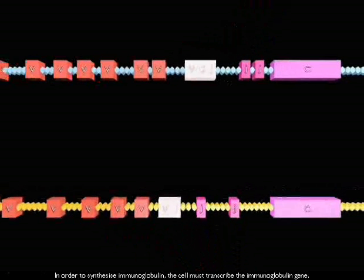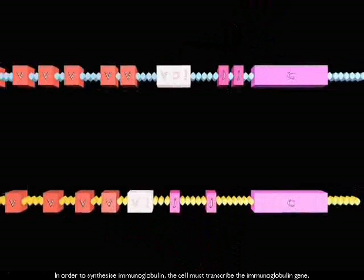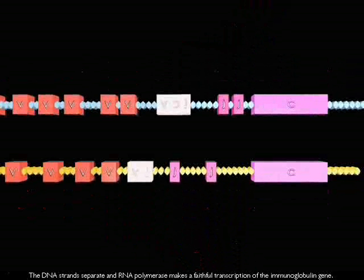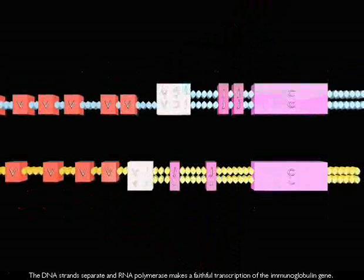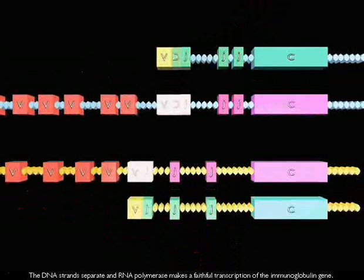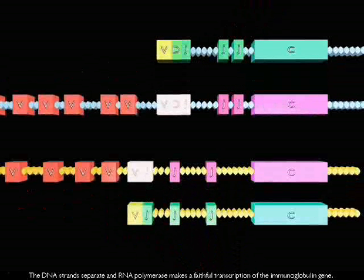In order to synthesize immunoglobulin, the cell must transcribe the immunoglobulin gene. The DNA strands separate and RNA polymerase makes a faithful transcription of the immunoglobulin gene.